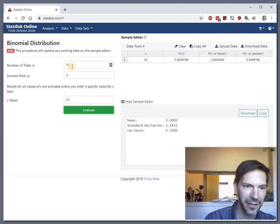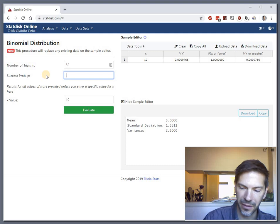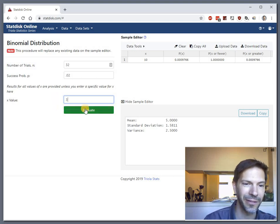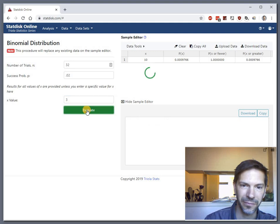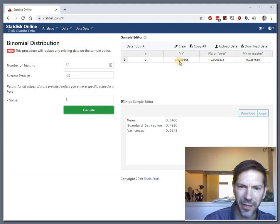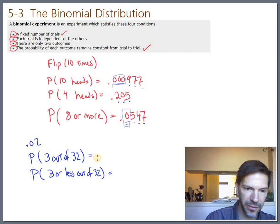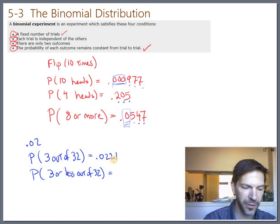So let's do three out of 32 with a 2% chance of success. So back to StatDisk. Now we have 32 trials. There are 32 people in the class. There's only a 2% chance that any individual, one of them, would have been a twin. And I'm interested in getting the probability that three out of those 32 were twins. So the probability of exactly three out of 32 is about 2%. And I'll go to three sig figs again. So ignore that first zero and then 2, 2, 1. So three out of 32 is 0.022, 1.